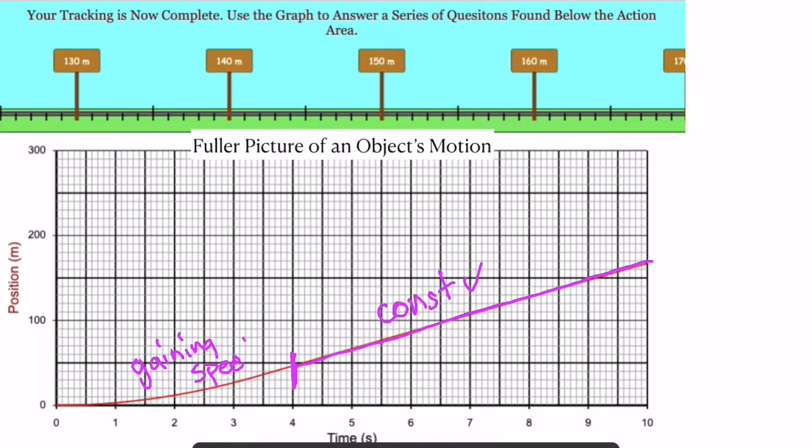So there's two types of velocities we might want to find. If we do average velocity for this whole run, we would do zero for the starting position, 170 for the ending position, which gives us 170 over 10 seconds, which gives us 17 meters per second. That is the average velocity of the car.